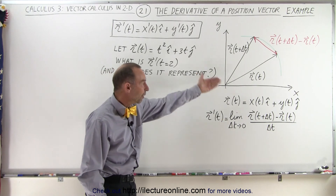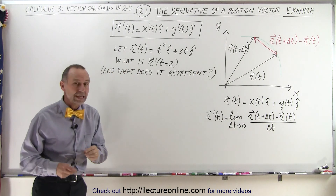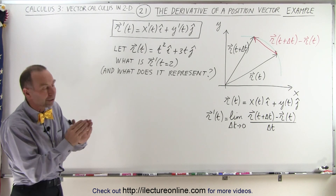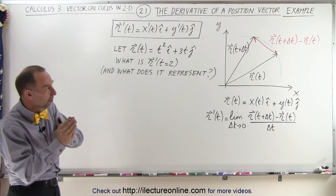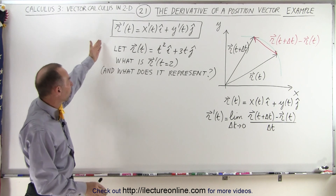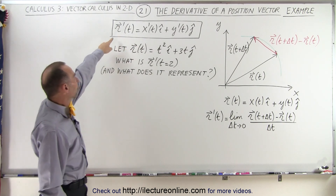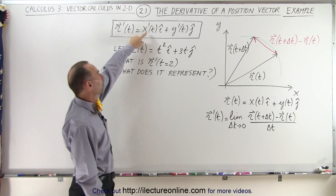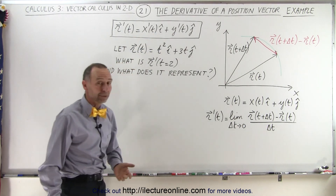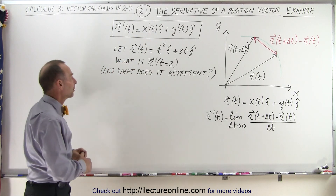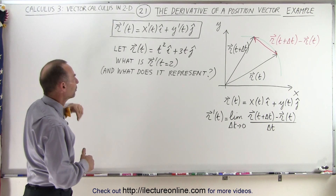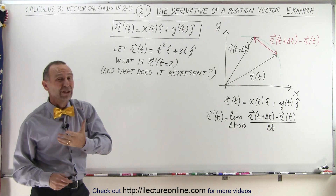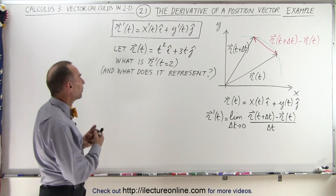You can see the general process here. We're going to take a position vector, then take a second position vector a small delta t later, and as delta t goes to 0, we end up with this equation right here where the derivative of the position vector is simply equal to the derivative of the x component plus the derivative of the y component with respect to that parametric variable. So we're going to evaluate the derivative when t is equal to 2 and then try to figure out what it actually represents.